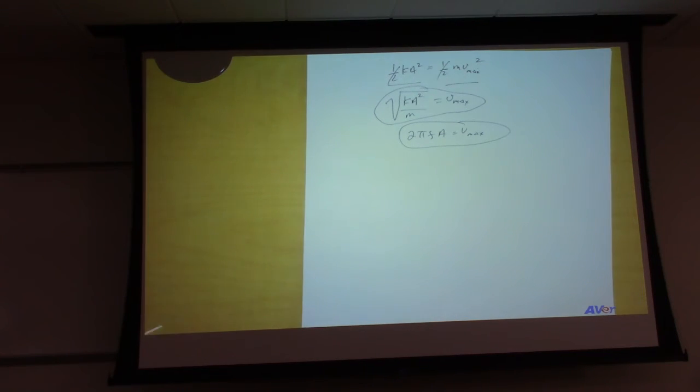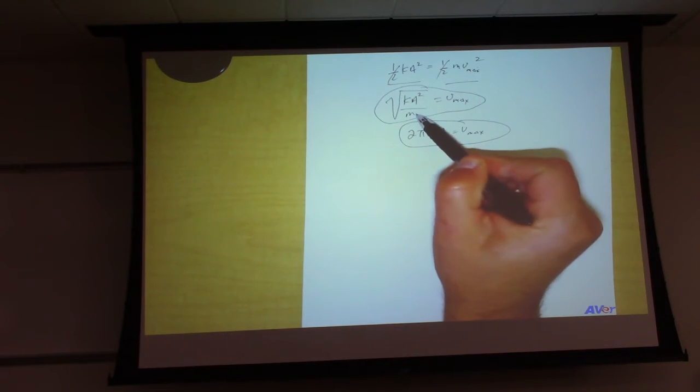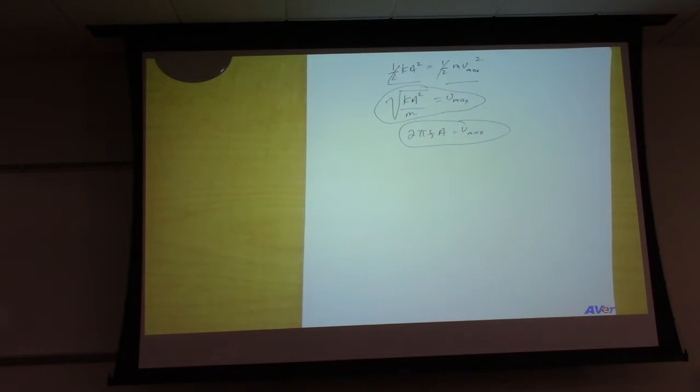Because you know the spring constant, the amplitude's given, the mass is given. That's just another way of getting the maximum speed. Good. Any questions on part b? Multiple ways of doing part b?